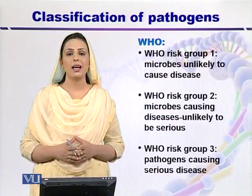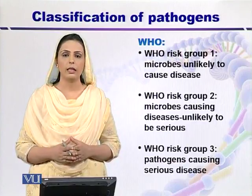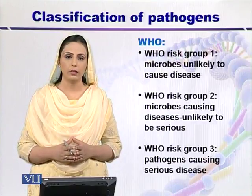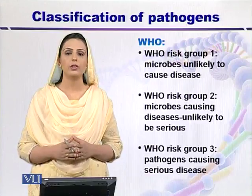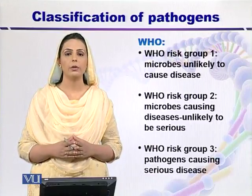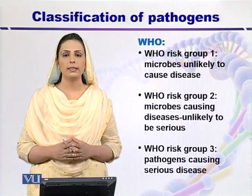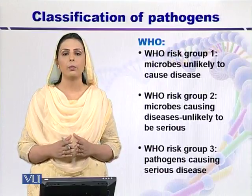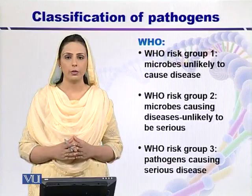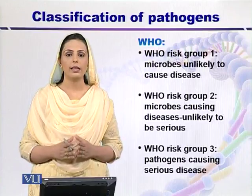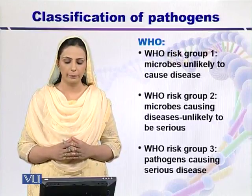According to World Health Organization, pathogens are classified according to risk factors into four groups: WHO risk group 1, WHO risk group 2, WHO risk group 3, and WHO risk group 4. All these categories are dependent upon the risk capability of the microorganisms. Now let's talk about WHO risk group 1.